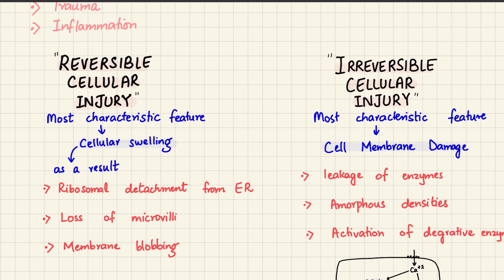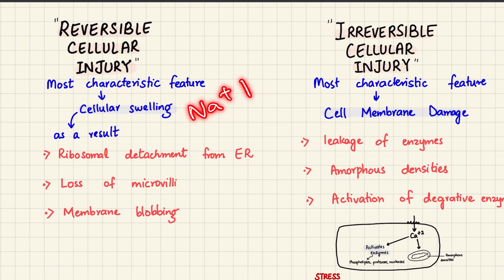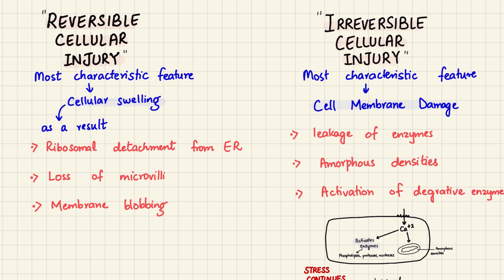Let's start with reversible injury. The most noticeable sign is cellular swelling. This is all about the sodium-potassium pump — when this pump stops working, ions start building up inside the cell and water follows, causing the cell to swell.